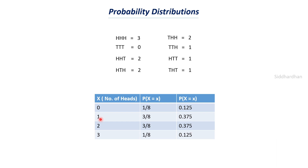The probability of getting one head is 3 by 8, since it can be tails-tails-heads, heads-tails-tails, or tails-heads-tails — three possibilities. For getting two heads, the possibilities are heads-heads-tails, heads-tails-heads, and tails-heads-heads — also three chances, so the probability is 3 by 8. And for getting three heads, there is only one possibility — all coins as heads — so the probability is 1 by 8.